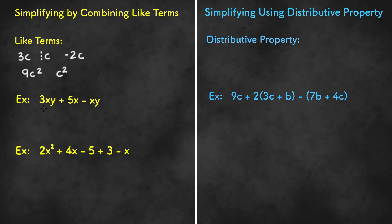In the first example we have 3xy plus 5x minus xy. The like terms in the example are 3xy and negative xy. So we should arrange the expression so that the like terms are closer together. We get 3xy minus xy plus 5x. And now we can simplify. 3xy minus xy or minus 1xy is 2xy, and then we have the plus 5x. And that would be our solution.